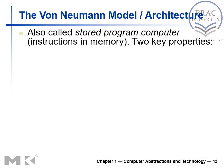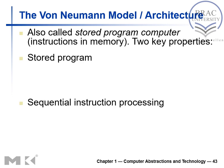We'll see one architecture which is called Von Neumann architecture, also called Stored Program Computer. It has two key properties: Stored Program and Sequential Instruction Processing.